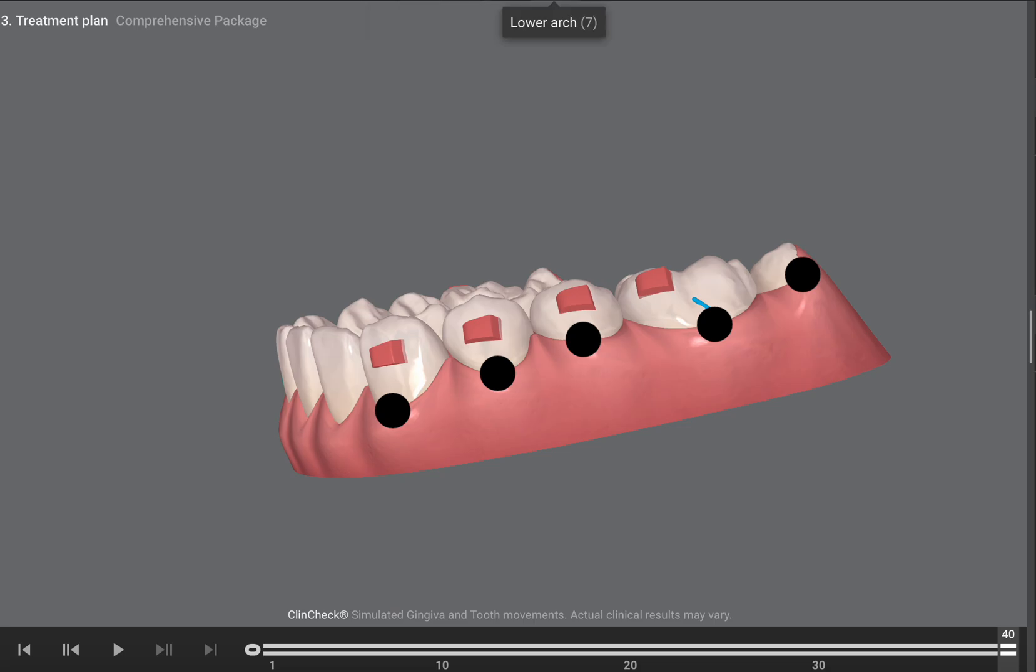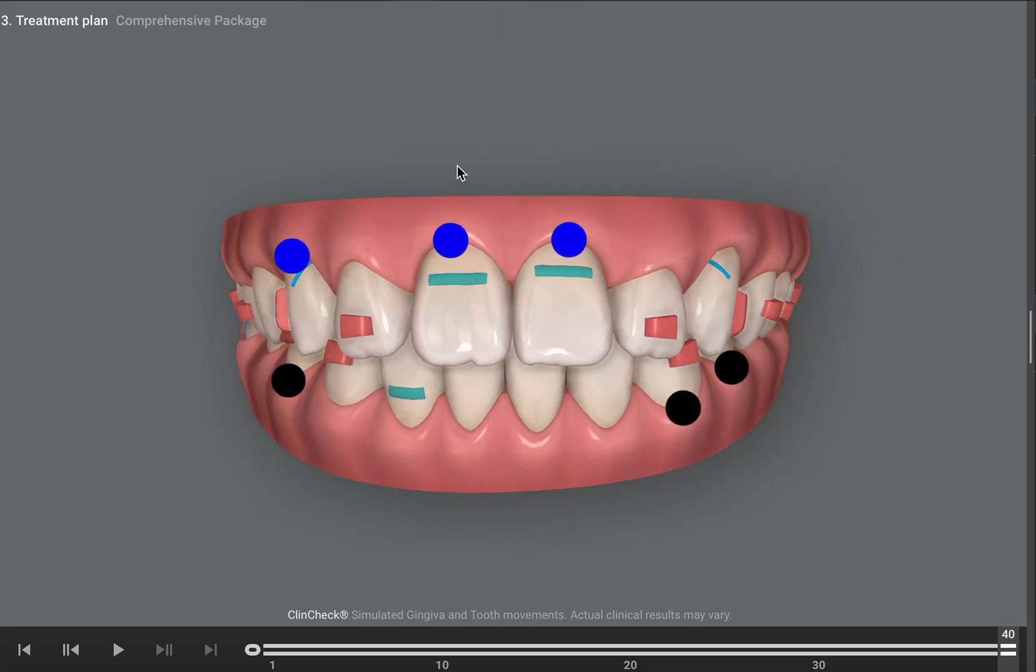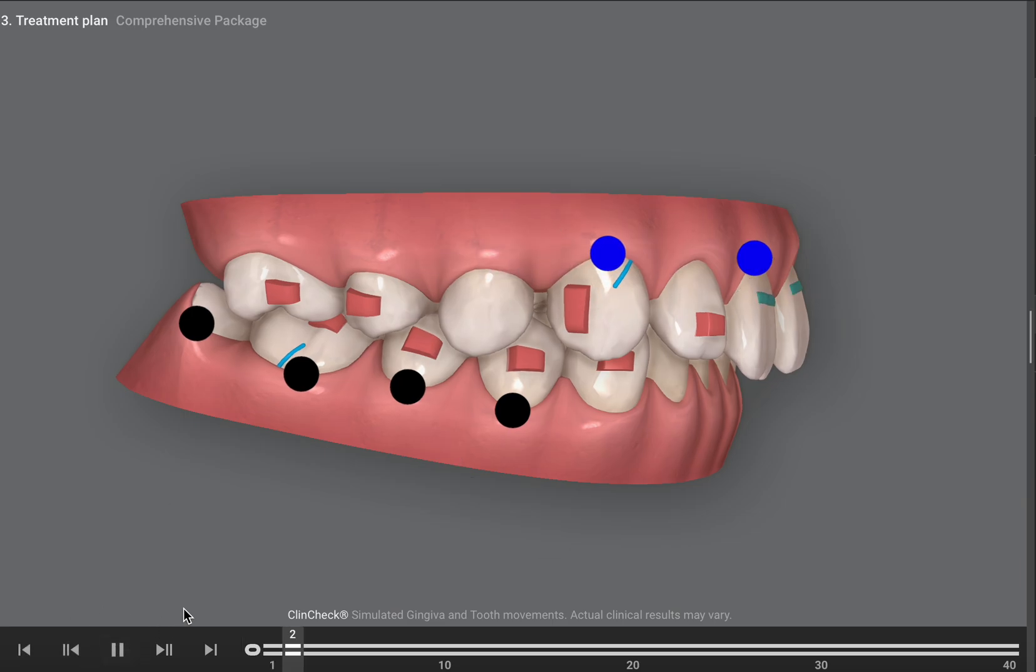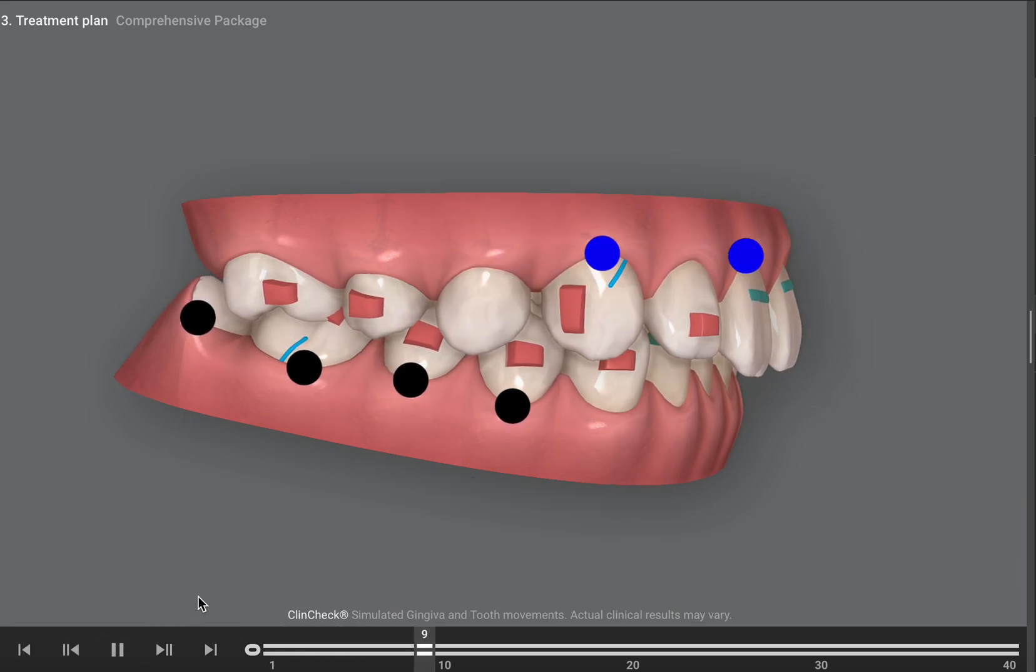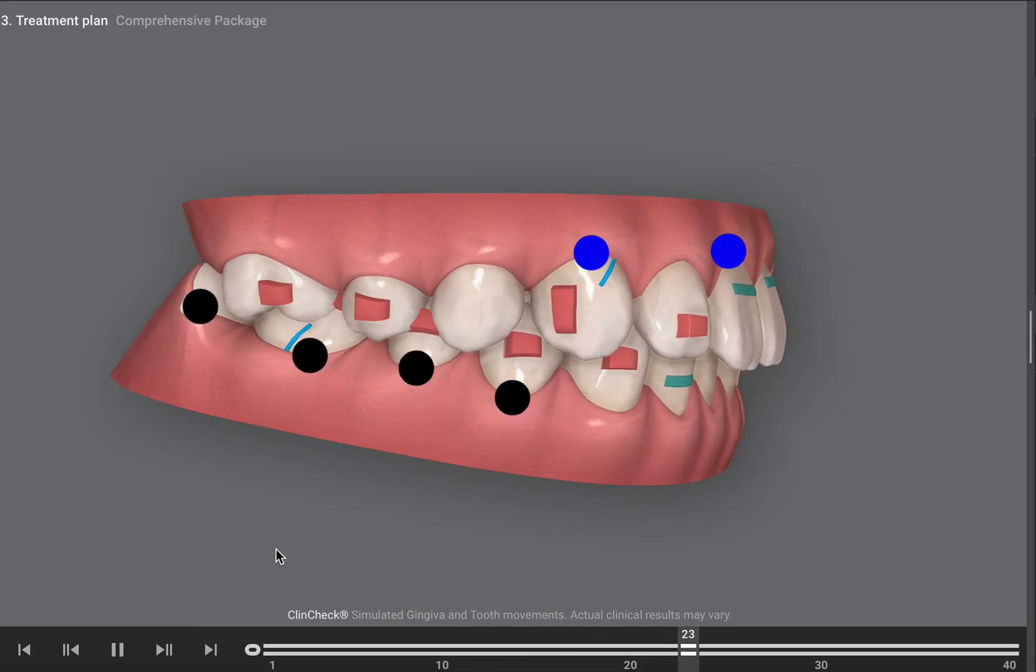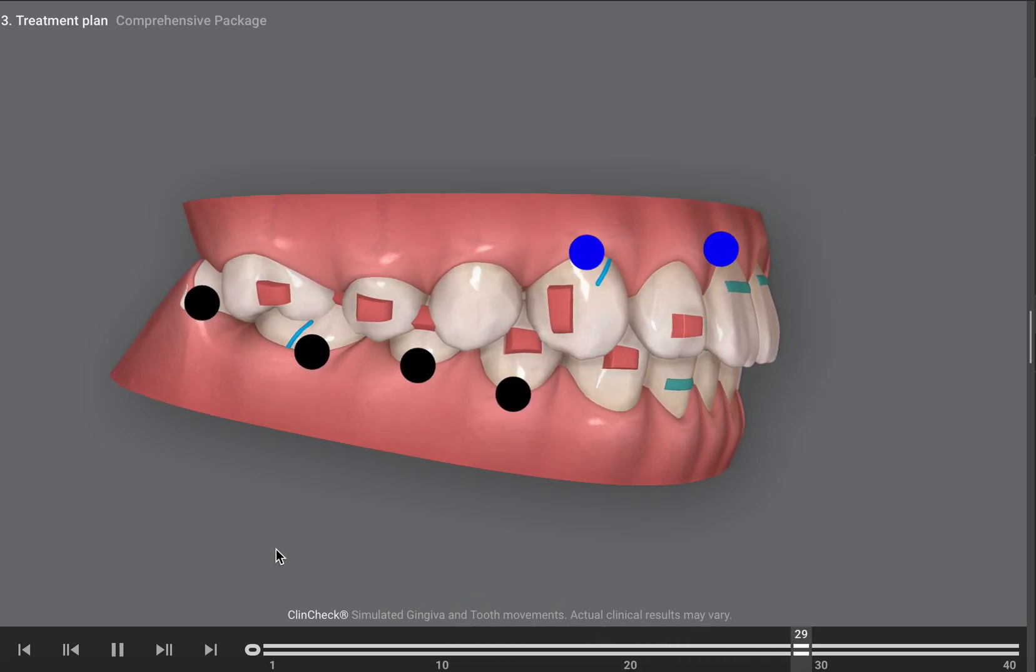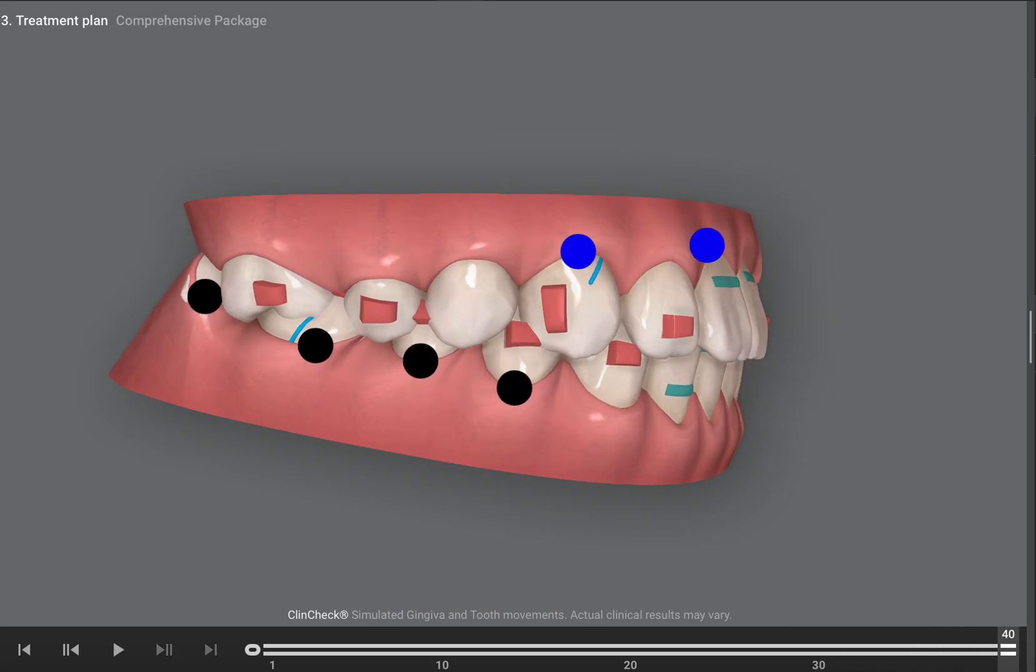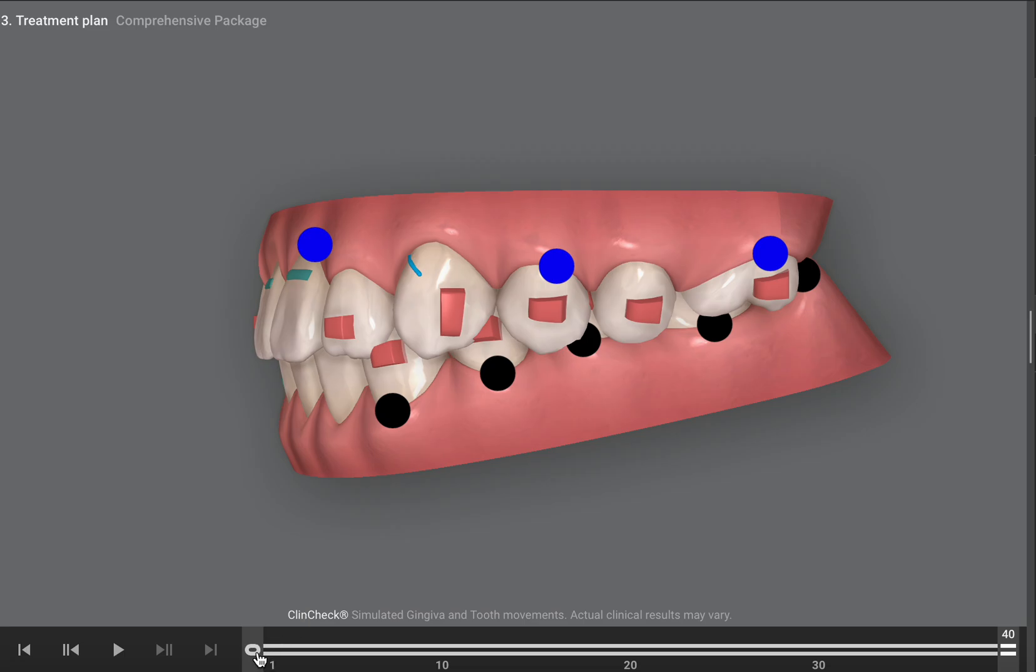Another tip is for this kid - he wasn't a class two to begin with, so you see he's got class one molars. But I've added elastic cuts and perhaps we can make the child wear really light elastics at night to help with that anterior retraction. So just some light elastic. To be honest, I think it'll work even without him wearing any rubber bands.